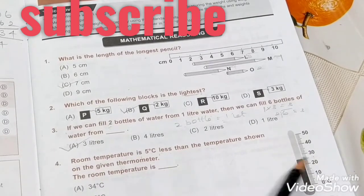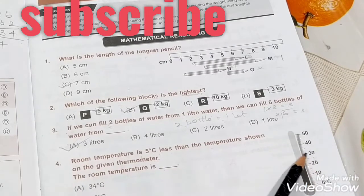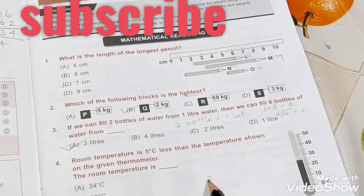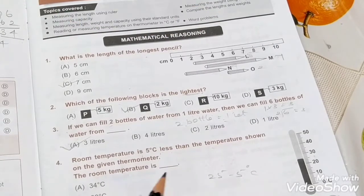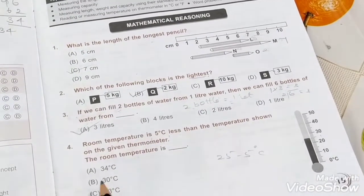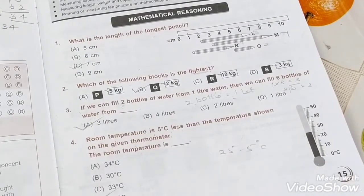So you have to subtract five. Five Celsius you have to subtract. 25 subtract 5 Celsius. What is the answer? 20 is the correct answer.